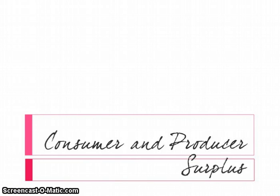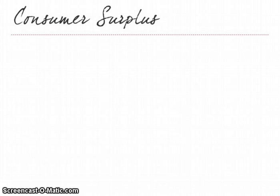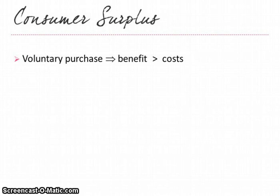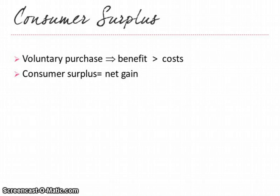In this lecture we're going to identify and describe consumer surplus and also producer surplus. Let's begin with consumer surplus. In a market economy, when an individual makes a purchase or an economic transaction, they are doing so voluntarily — they believe that the benefits of that purchase are greater than the cost. Consumer surplus is a measurement of the net gain that an individual attains when they make a purchase.